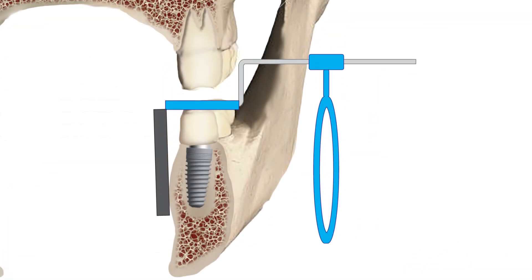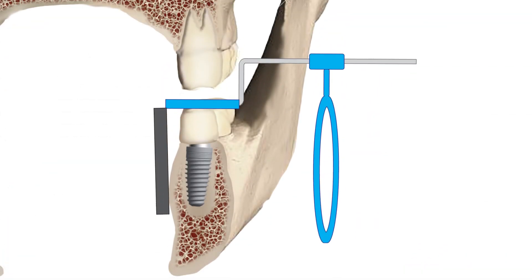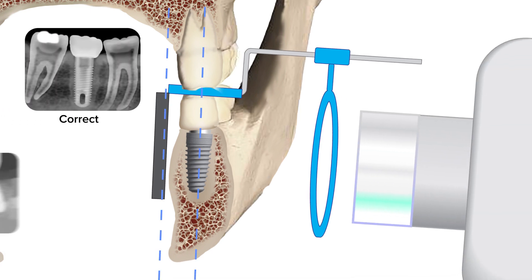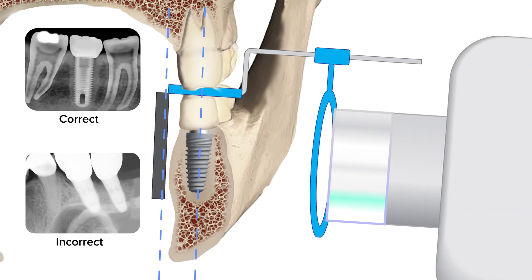Typically the easiest place to start is with a radiograph, but to be useful it needs to be optimally oriented to clearly capture the characteristics of the implant. So when taking an x-ray, it's important to keep the following things in mind. First, the sensor or film should be parallel to the implant. This will provide the clearest view of the implant's unique characteristics.